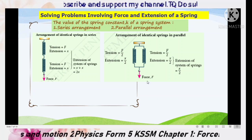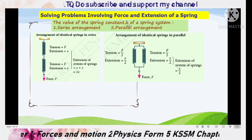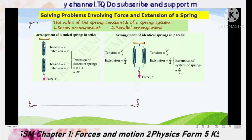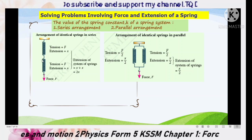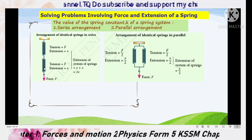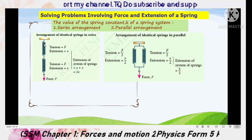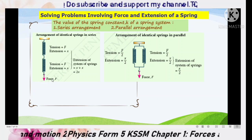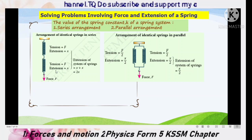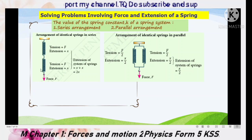The first case is the arrangement of identical springs in series. We also want to discuss what happens to the value of spring constant K for the spring system. In a series arrangement, two springs are attached end to end. The force that acts on each spring equals the weight of the load, so each spring experiences the same amount of force — equal to the applied force F. The tension in each spring equals F.